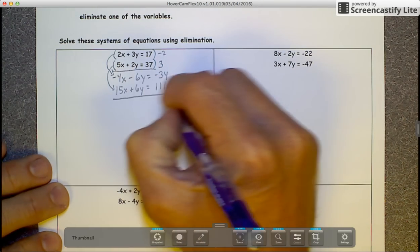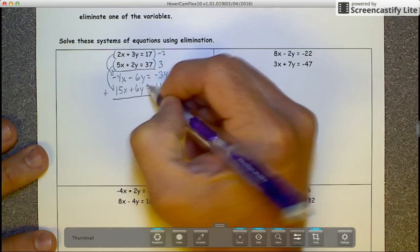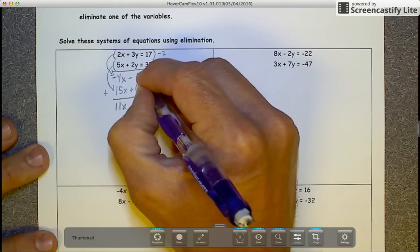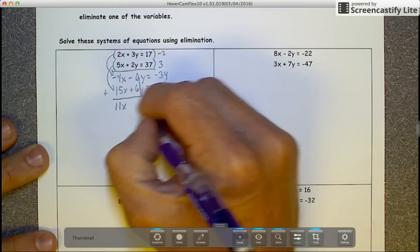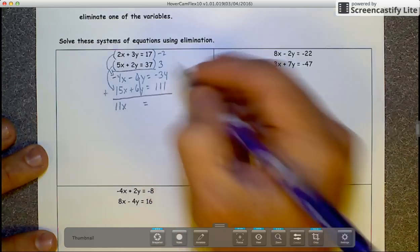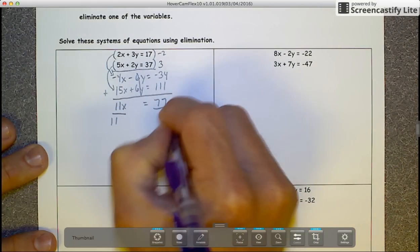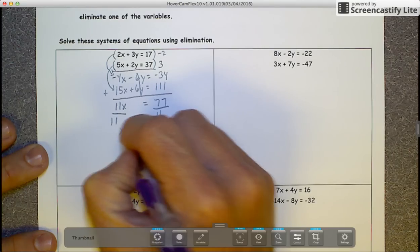We're going to add the equations together. Negative 4 plus 15 would be 11x. Negative 6y plus 6y cancels out. Negative 34 plus 111 is 77. Then we divide by 11, and you get x equals 7.